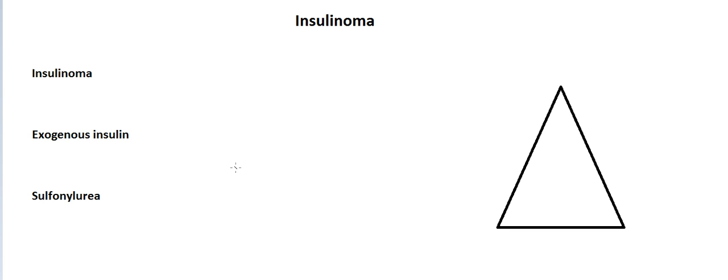Insulinoma, as the name suggests, is an insulin-producing tumor. Insulin, as you all know, is produced in the beta cells of the pancreas, so this tumor arises in the beta cells of the pancreas.